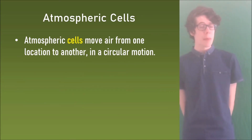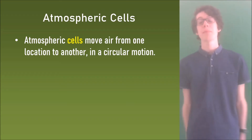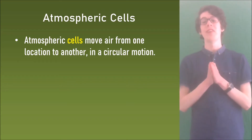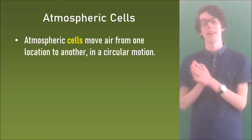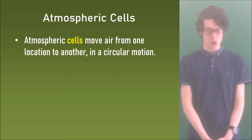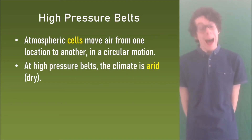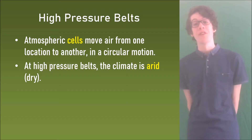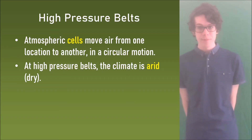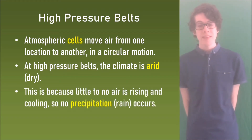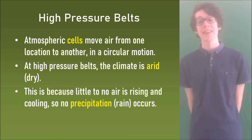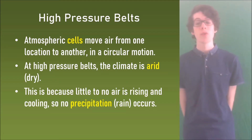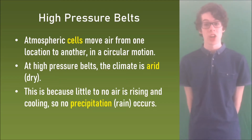Remembering from the last video, we learned about atmospheric cells, which move air from one location to another in a circular motion. High pressure belts have dry climates — another word for dry is arid. This is because little to no air is rising and cooling, so no precipitation or rain occurs.